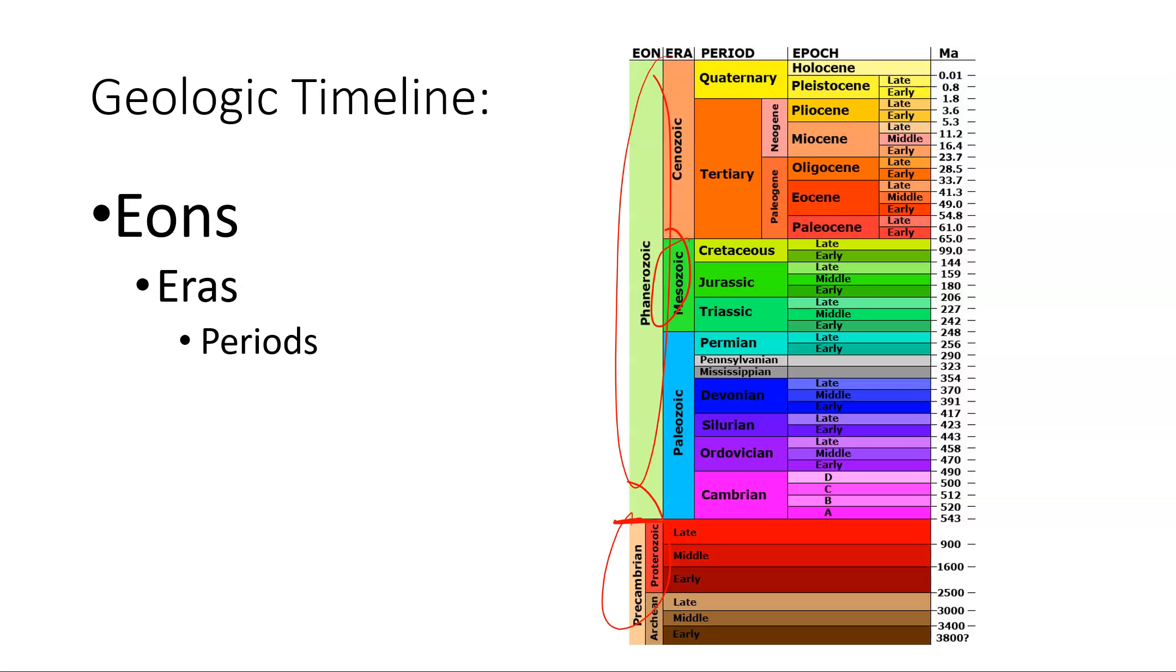Within those eras we have periods. Going back to the Mesozoic, we have the Triassic, Jurassic, and Cretaceous. That popular movie Jurassic Park is referring to that period, although many of the dinosaurs in Jurassic Park were from the Cretaceous period, so it might have been more aptly named Cretaceous Park. Then we have epochs. Getting into more recent history, we have the Holocene Epoch, which is where we are now. So eons are the longest, followed by eras and periods, and then epochs being the shortest timeline.